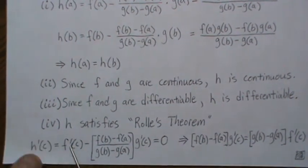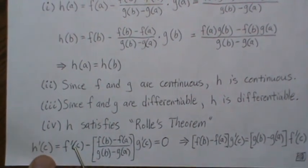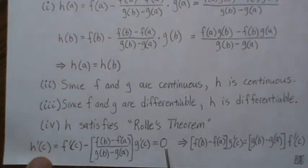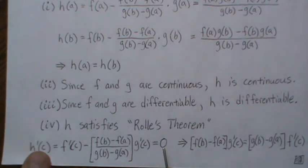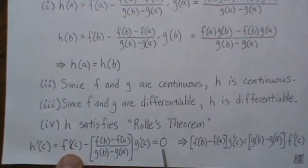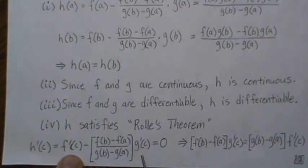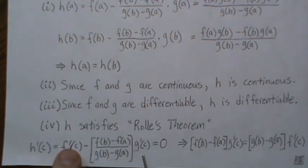So the derivative of h at c is zero, but we can take the derivative of h. That's the derivative of f, this is a constant, so then the derivative of g evaluated at c.